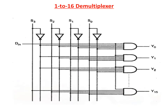1 to 16 D-multiplexor. Here 4 selection lines are there, single input D-in and 16 outputs. The 4 selection lines are S0, S1, S2, S3, and the outputs are Y0 to Y15. This is the logic diagram representation for 1 to 16 D-multiplexor, where Y0, Y1, Y2 and up to Y15 variables are represented.